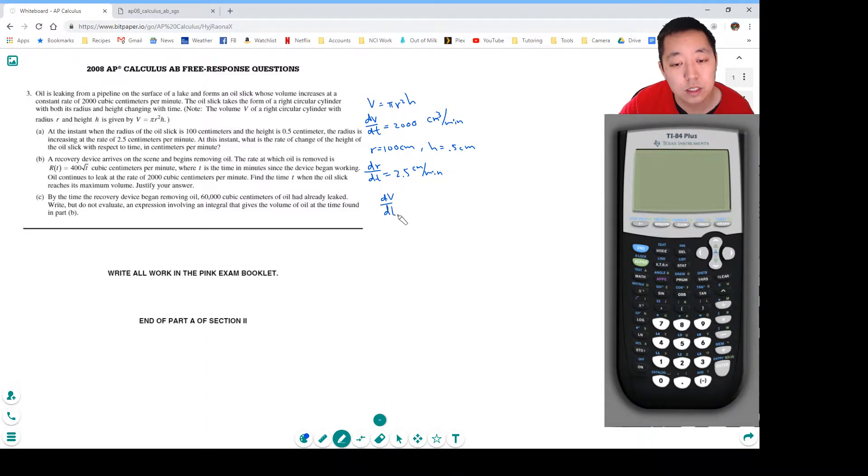I get dV/dt equals pi... here I'm going to do product rule for this, right? 2R dR/dt H plus R squared dH/dt.